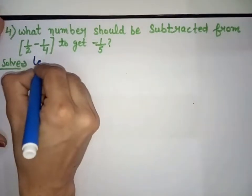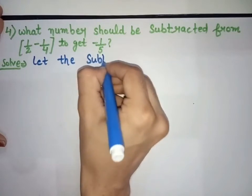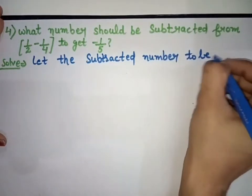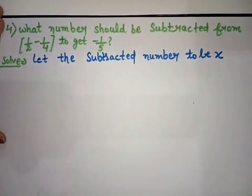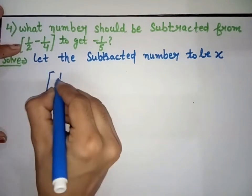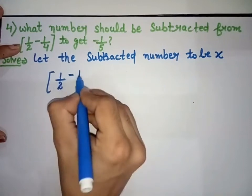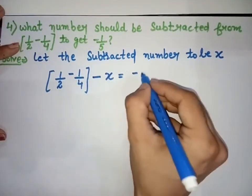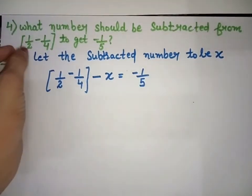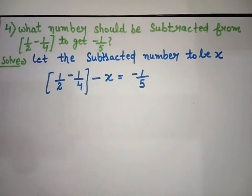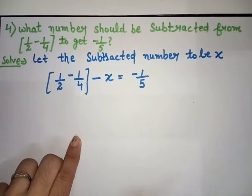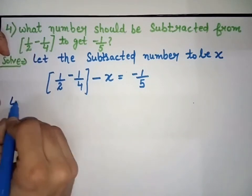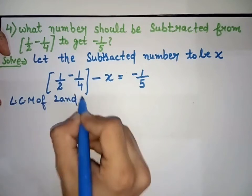Let the subtracted number be x. The statement is: bracket minus 1 over 2 minus 1 over 4 bracket close, minus x, equals minus 1 over 5. First, we solve the bracket. LCM of 2 and 4 equals 4.